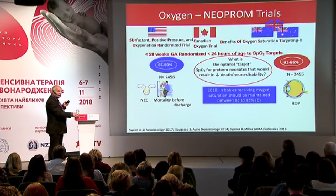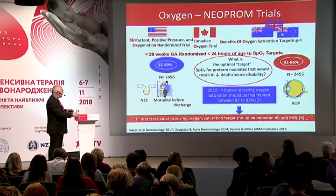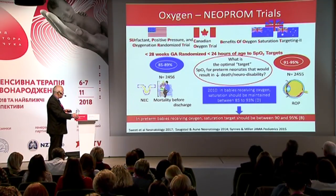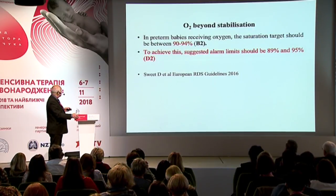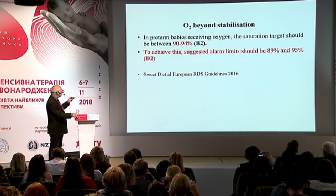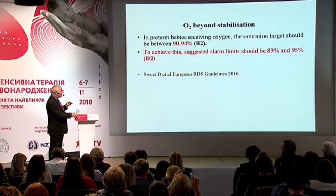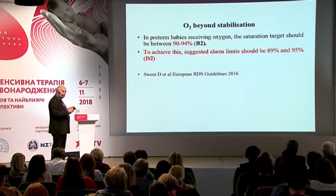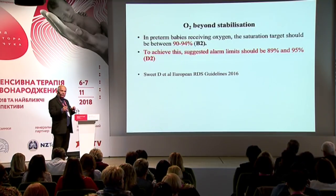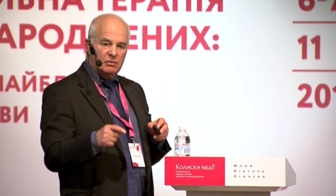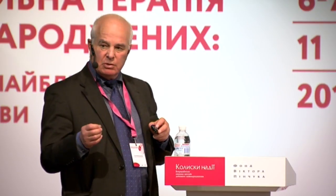The European guidelines previously said oxygen saturation should be 85–93%; they have now been changed. The American Academy of Pediatrics recommends 90–95%, and the Europeans recommend 90–94%. We suggest target 90–94% with alarm limits of 89 (lower) and 95 (upper). The reason for 90–94 rather than 91–95 is that we don't want saturation to increase above 95–96%, because then we lose control of what the PO2 actually is—it could be very high.